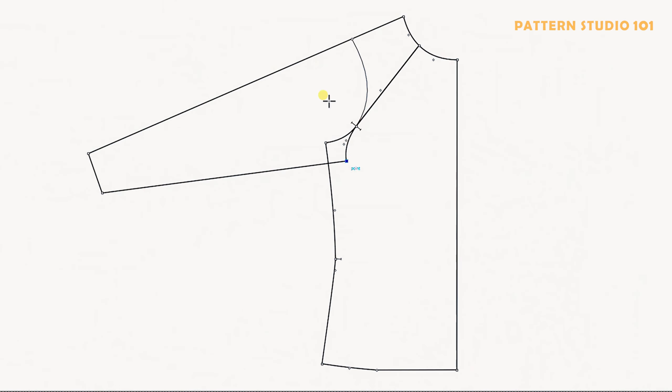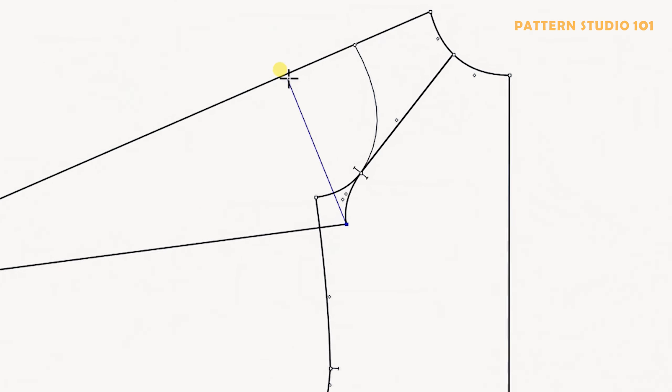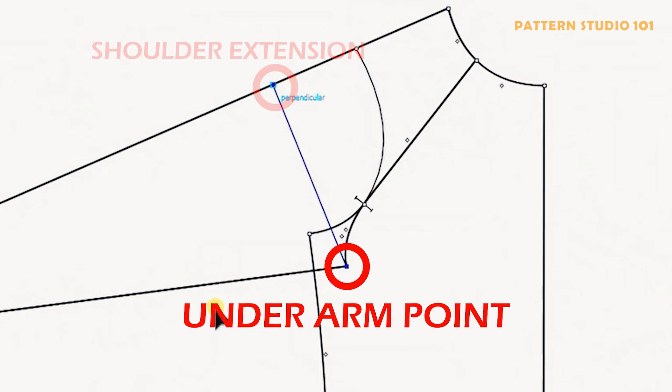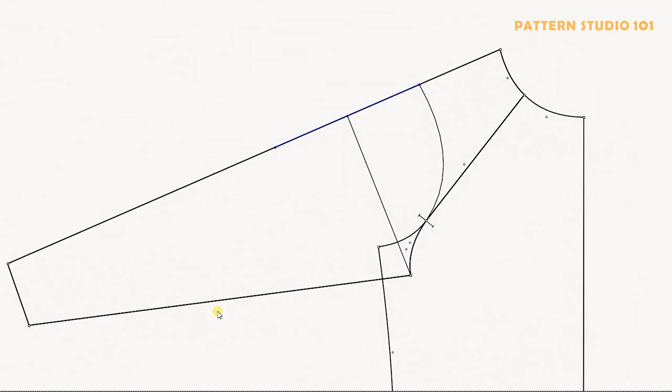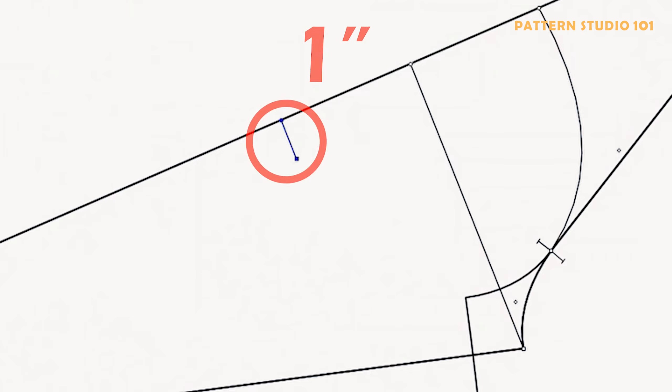Let's draw a bicep line from the underarm point to the shoulder extension. This should be 90 degrees. To make an angled raglan, from the shoulder point, measure 7 inches and draw a perpendicular line 1 inch.